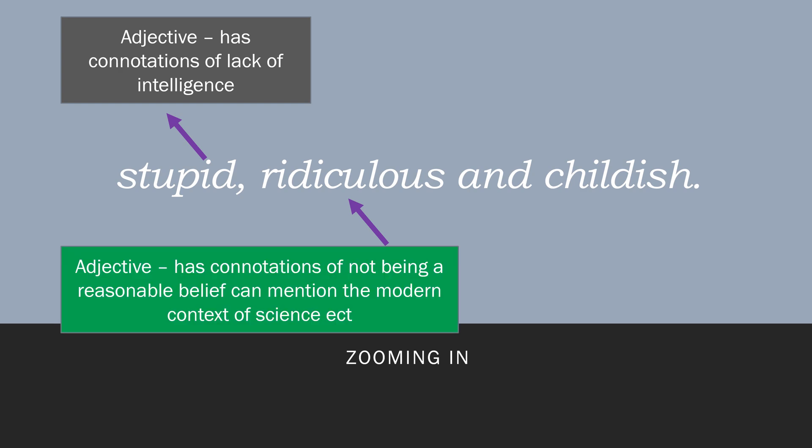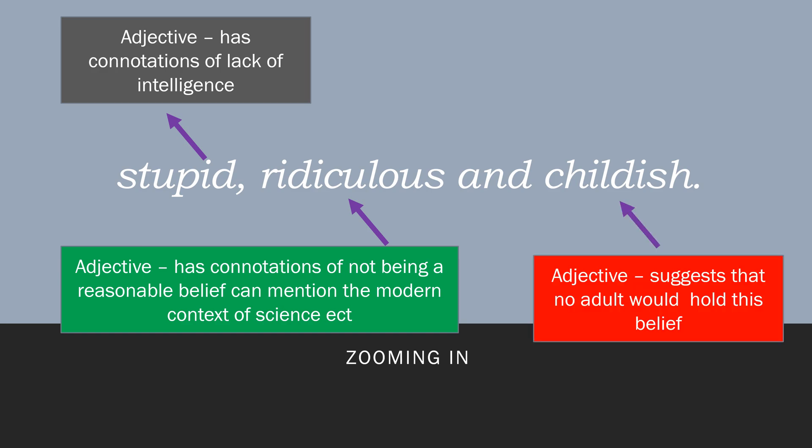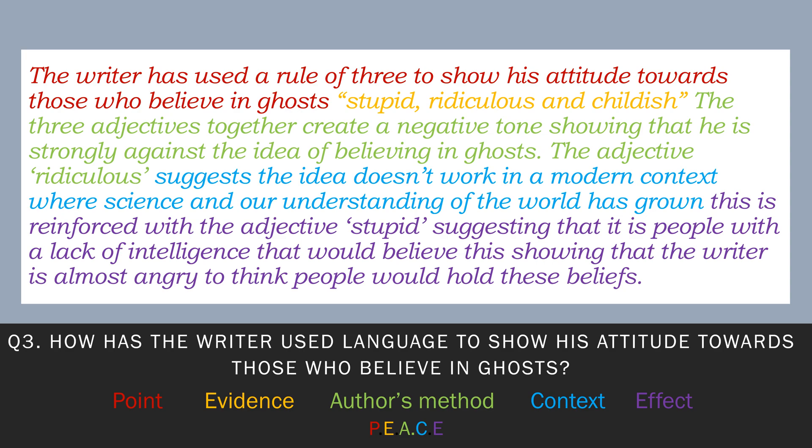Once again, we've got another adjective — ridiculous. This has connotations of not being a reasonable belief, and we can mention the modern context of science and such things. Then we've got childish — it's an adjective. It suggests that no adult would hold this belief. So we've got those three adjectives, and our job would be to explain the connotations of these words in relation to the exam question, which is how does the writer use language to show his attitude towards those who believe in ghosts?